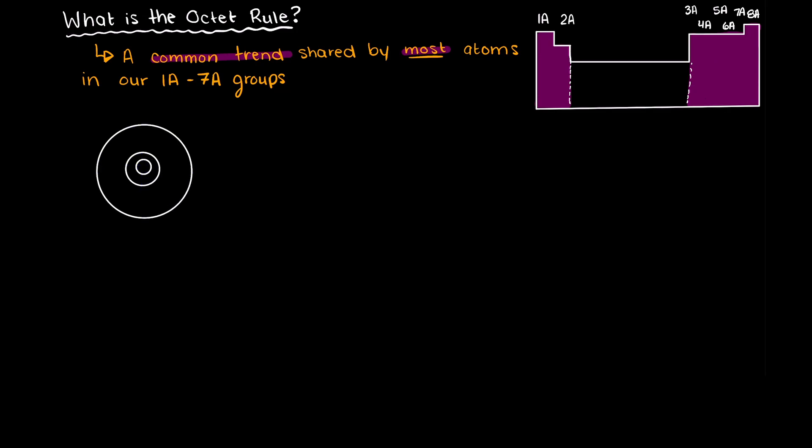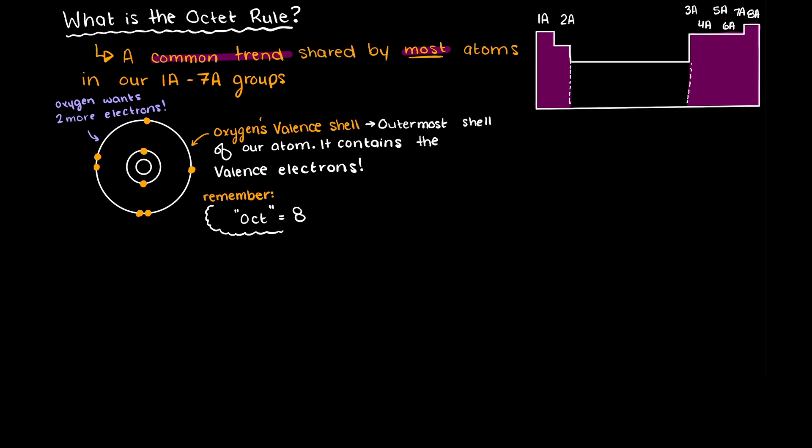The octet rule means that the atoms almost all want to react in a way that will give them a valence shell of 8 electrons. Our atom's valence shell is the outermost shell of the atom that contains the valence electrons. Oct simply means 8, so that should help you remember how many electrons you are looking to put in the atom's valence shell, which we talked about briefly in the previous video.